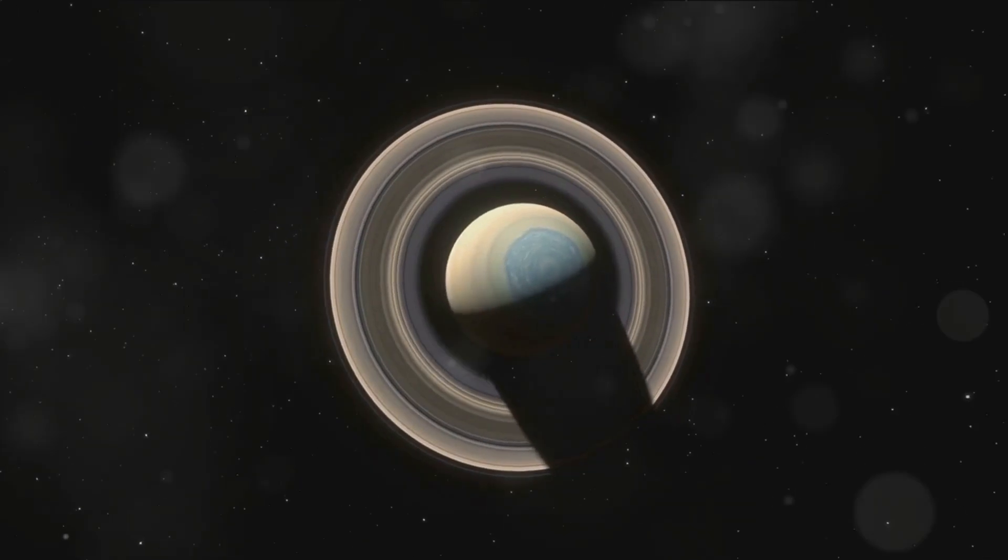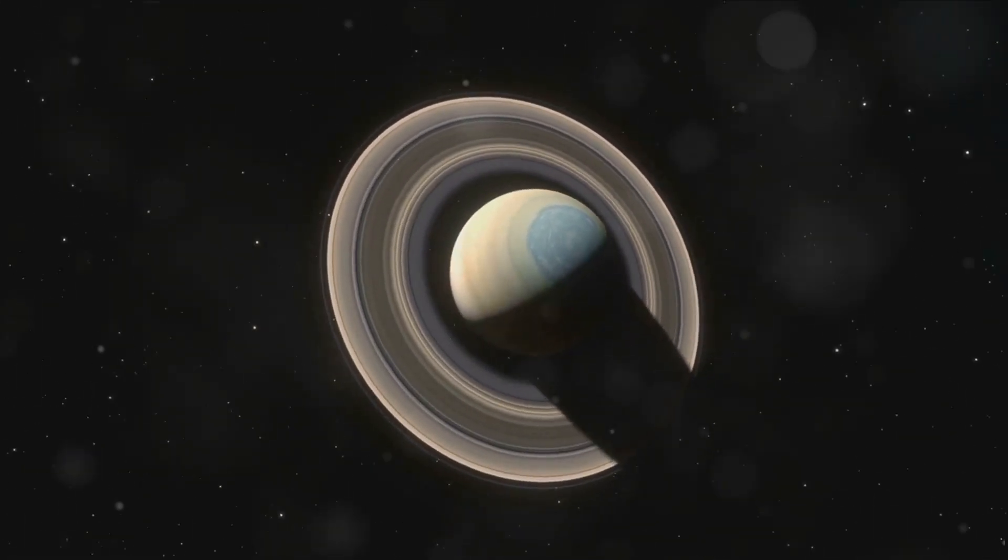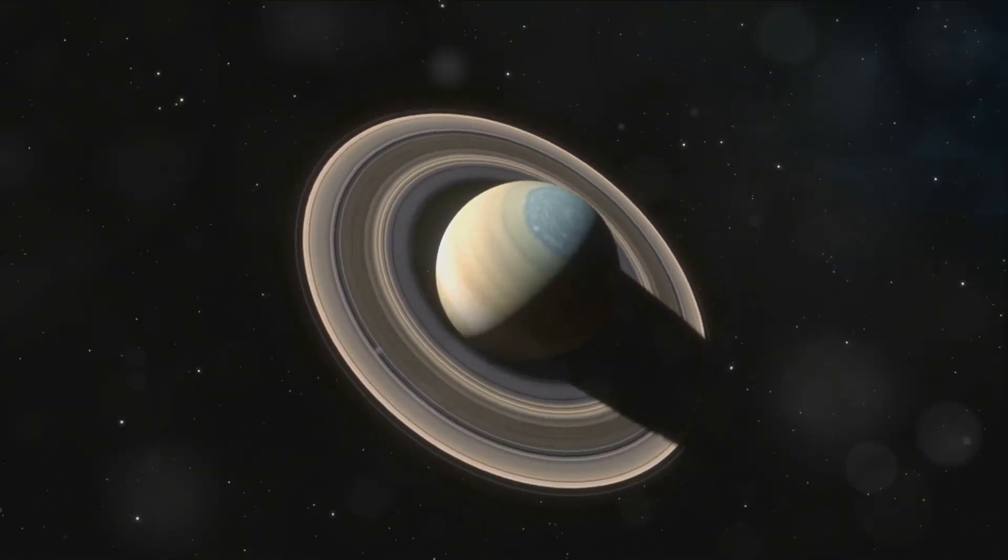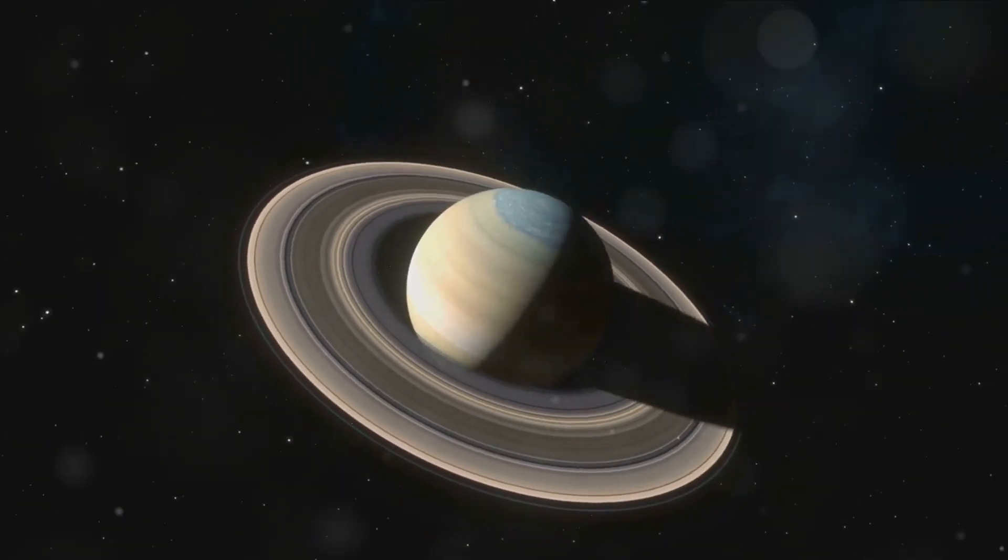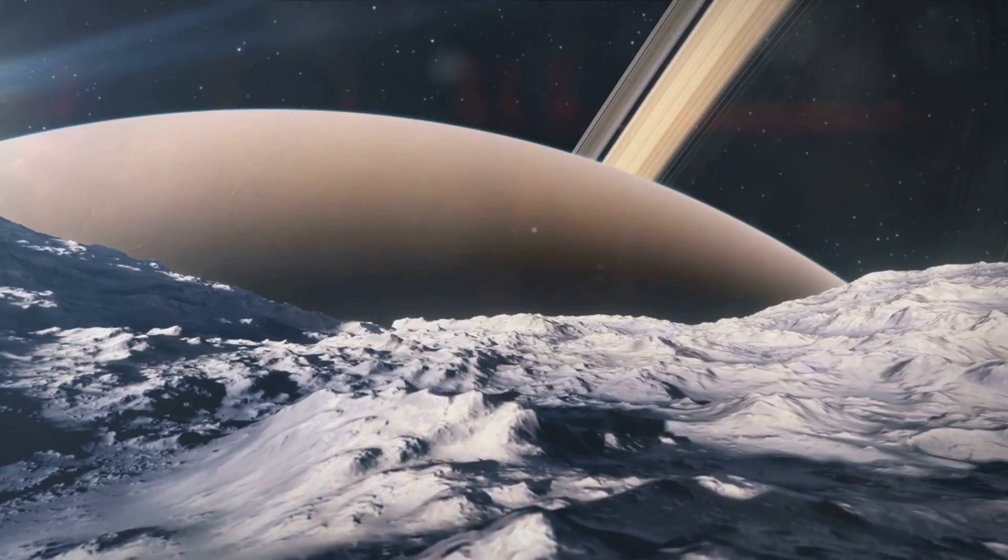Imagine a storm so large it could swallow Earth two times over, all while maintaining a near-perfect hexagonal shape. This isn't a common occurrence in nature, making it all the more intriguing.